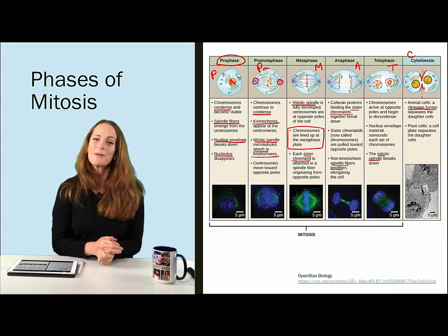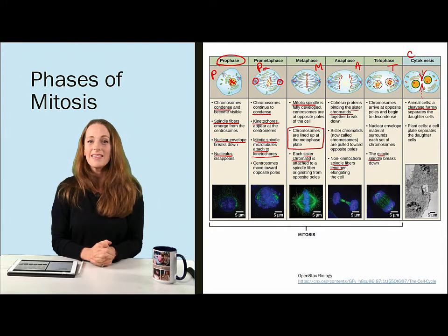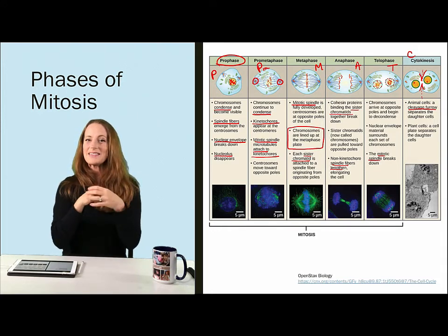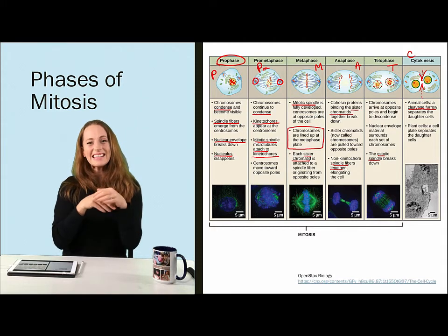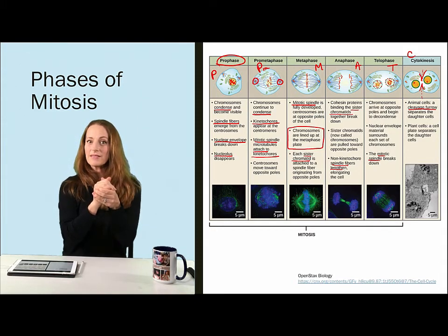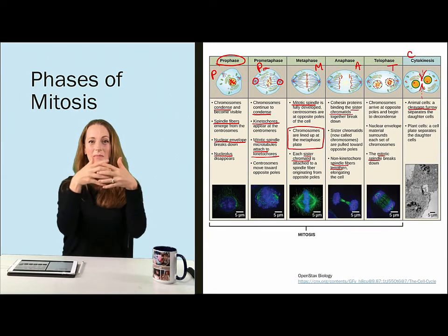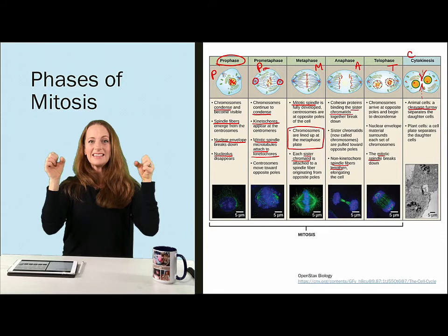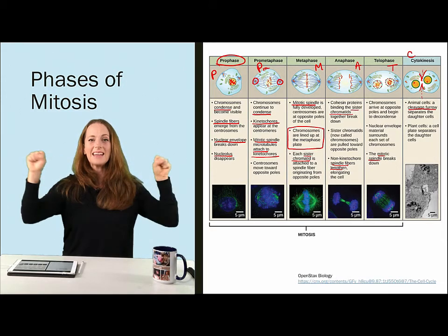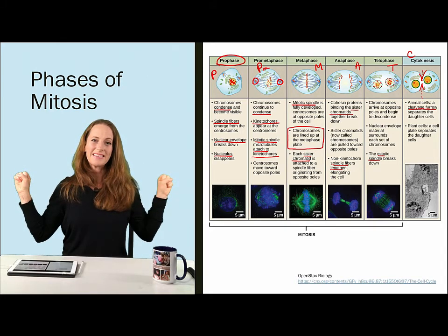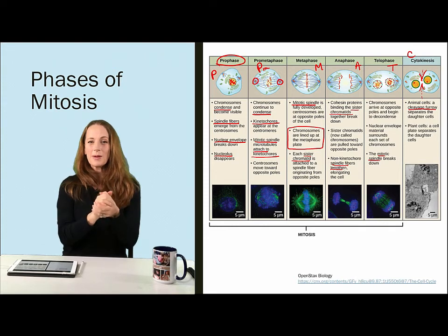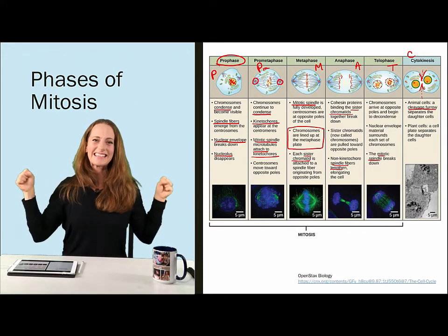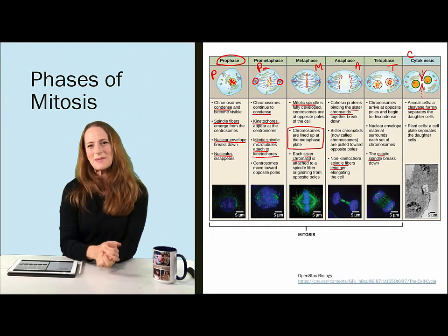A quick trick for remembering the phases of the cell cycle: interphase is the majority of the cell cycle — G1, S, G2 phases. Then prophase, the first part of mitosis. Metaphase, everything's lined up. Anaphase, sister chromatids separate. Telophase, the nuclei reform. And cytokinesis, the daughter cells split apart. Kind of silly, but it helps remember.